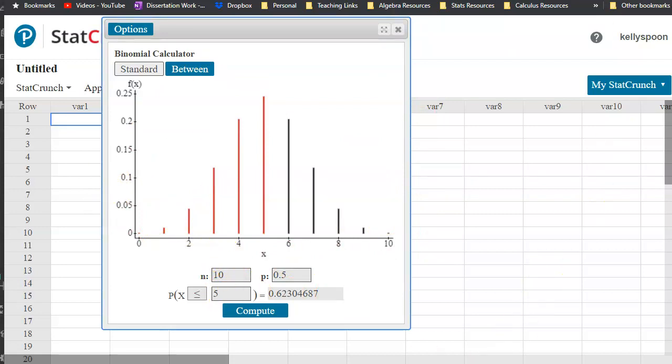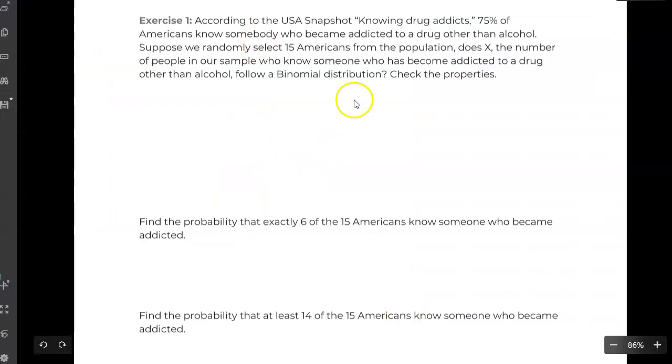We look back at that question we looked at in this example: 75% was our P, our random selection was 15. So we had 15 independent trials, 15 randomly selected adults that we were looking to see whether or not they had this success, the number of them that knew somebody who became addicted to a drug other than alcohol.